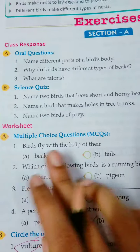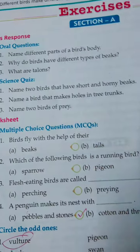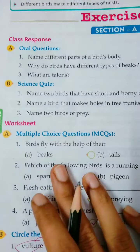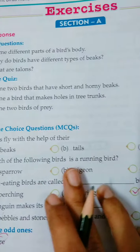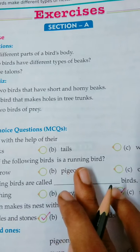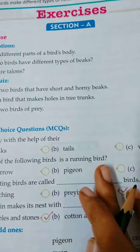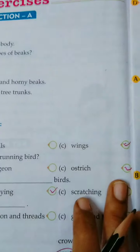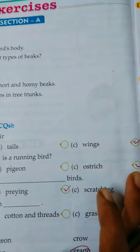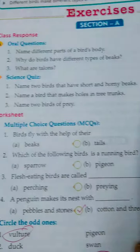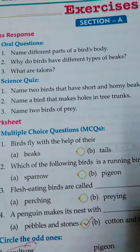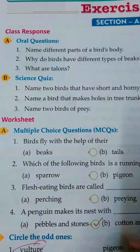Birds fly with the help of their wings. Which of the following birds is a running bird? The choices are sparrow, pigeon, and ostrich. The ostrich is a running bird — they have long legs and don't fly. Sparrow and pigeon can fly.